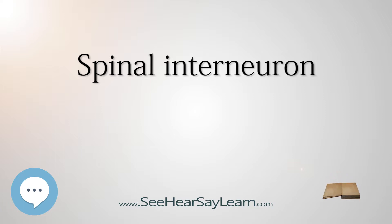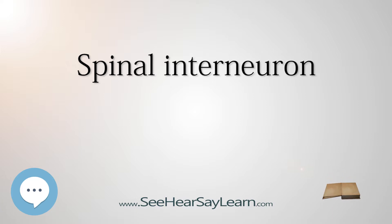The sensory information that is transmitted to the spinal cord is modulated by a complex network of excitatory and inhibitory interneurons. Different neurotransmitters are released from different interneurons, but the two most common neurotransmitters are GABA, the primary inhibitory neurotransmitter, and glutamate, the primary excitatory neurotransmitter. Acetylcholine is a neurotransmitter that often activates interneurons by binding to a receptor on the membrane.